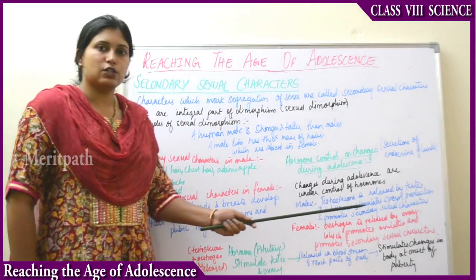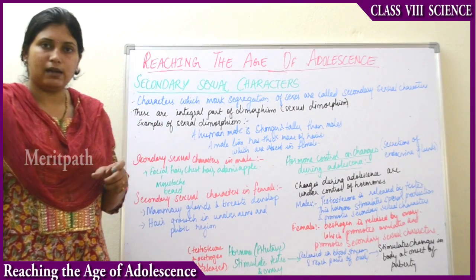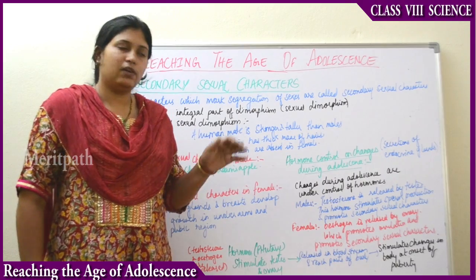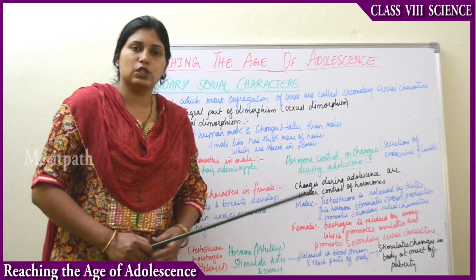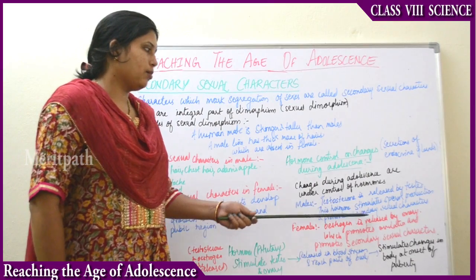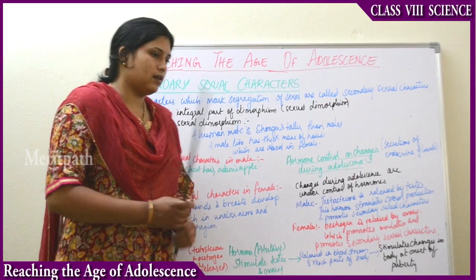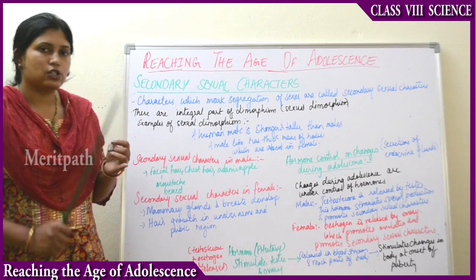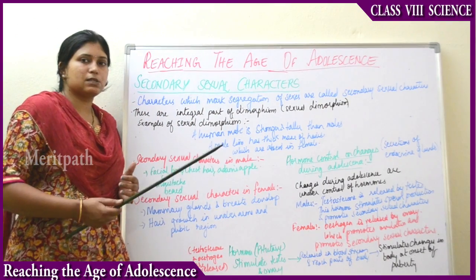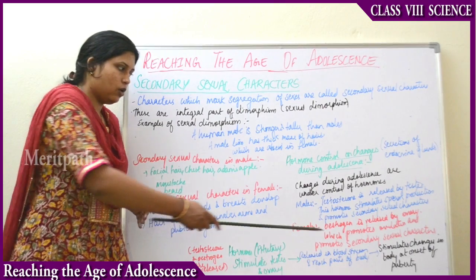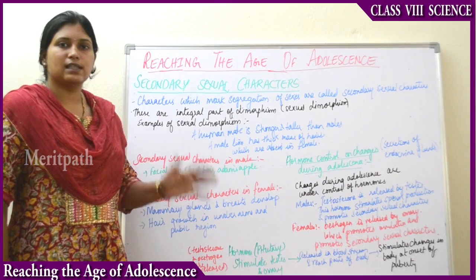In males, testosterone is released by the testis. The testis is the male gonad which produces sperms and also produces testosterone. The function of this hormone is to stimulate sperm production and to promote the growth of secondary sexual characters.